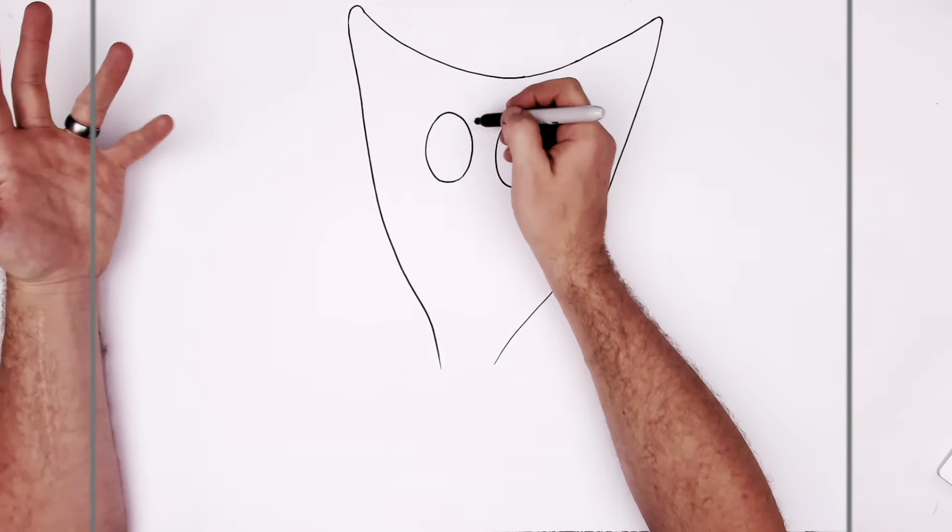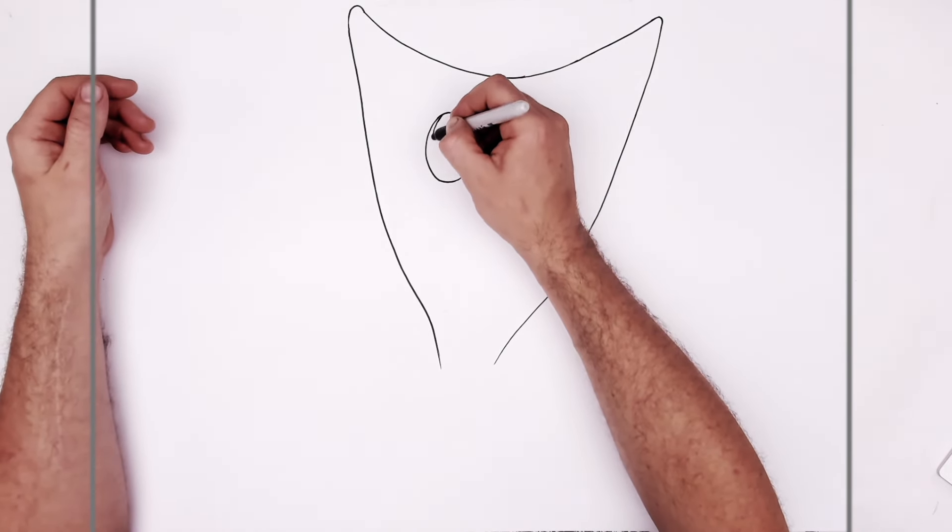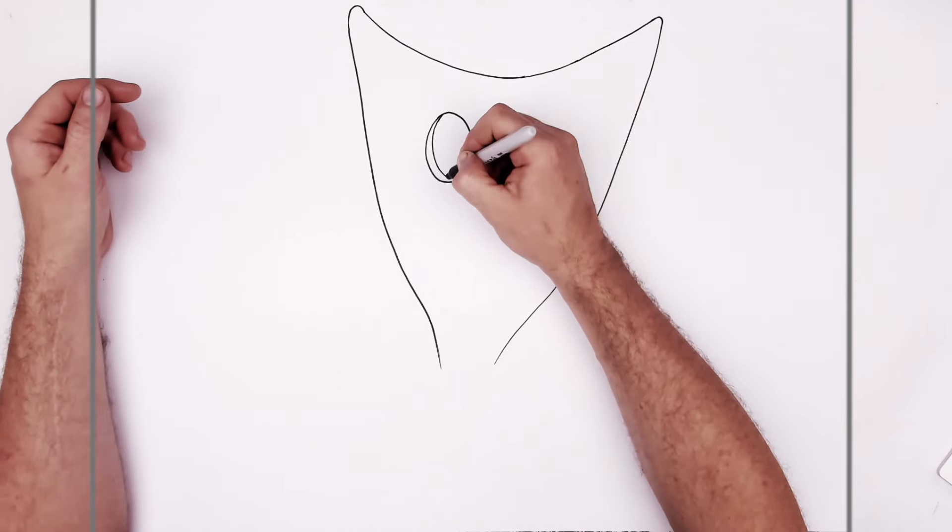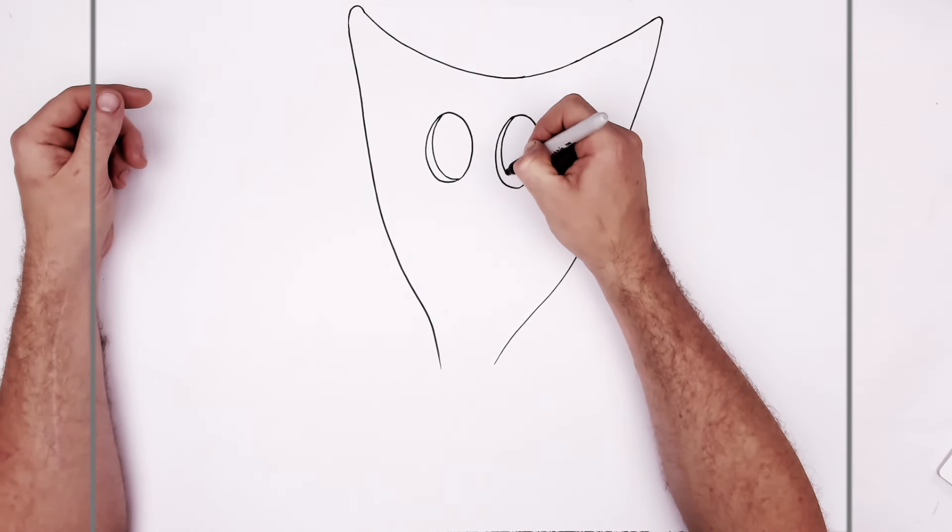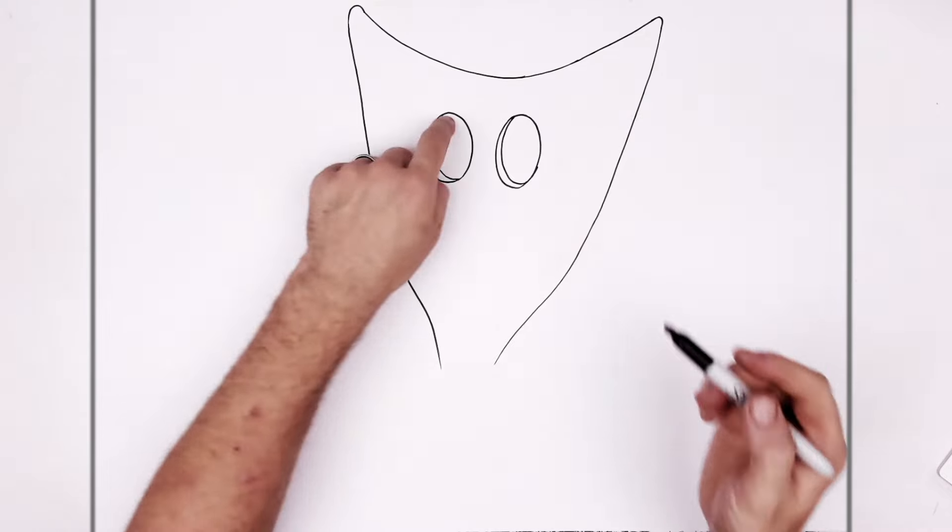All right, and they're like hollow inside, so we give them like a little curved line around, and same in here. And then I'll just color in their black.